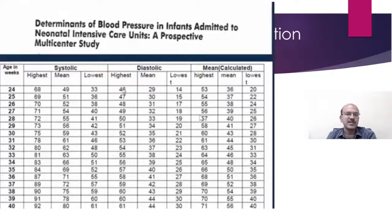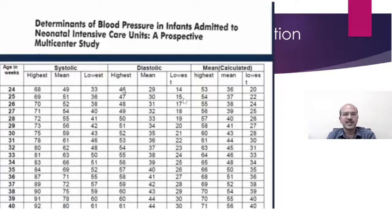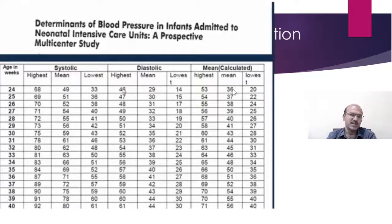A chart giving the blood pressure range for each gestational age — showing systolic, diastolic, and mean values — is important to have in your unit to guide management. You can see the lowest systolic and mean pressures that can be accepted, and in the immediate newborn period your threshold can be different from after the first two days when you need to start moving up the range.